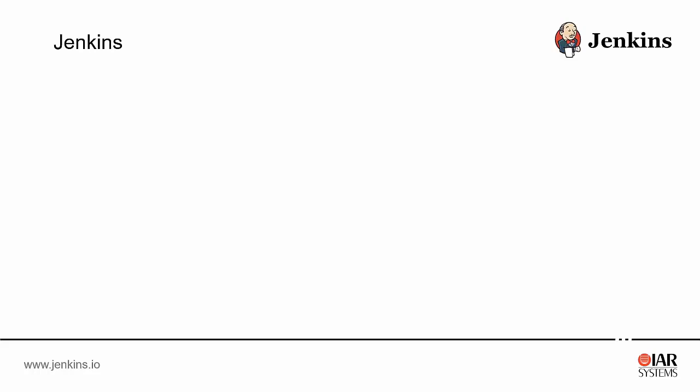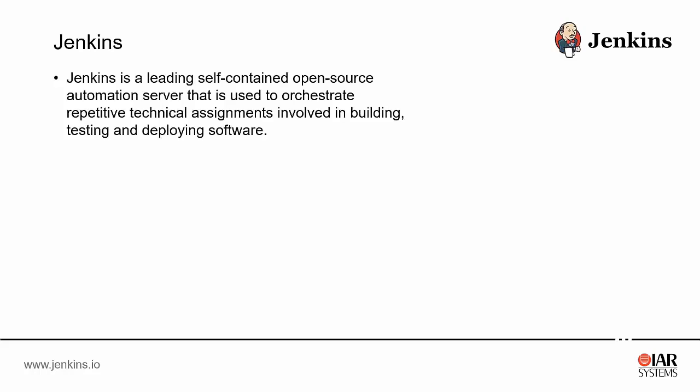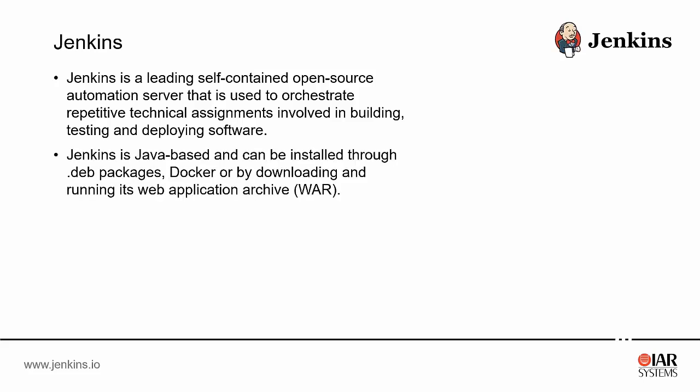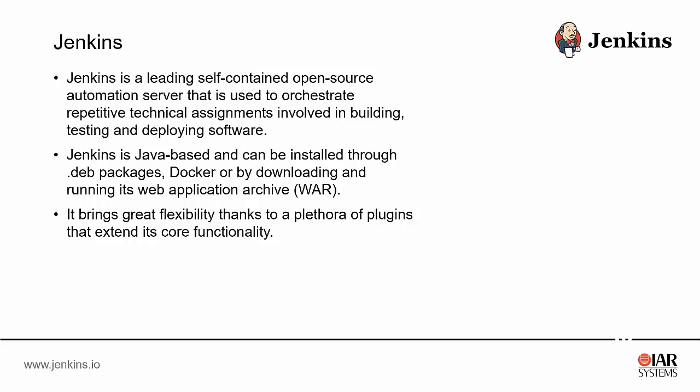Starting with Jenkins — you can find more information at jenkins.io. It's a self-contained open source automation server that can be used to orchestrate repetitive technical assignments involving building, testing, and deploying software. It's Java-based, works well, and can be installed in many different ways: as a deb package on Ubuntu or Debian-based systems, dockerized, or executed from its web application archive. The great thing about Jenkins is that it comes with lots of different plugins that extend its core functionality, which might be the root cause of its popularity.